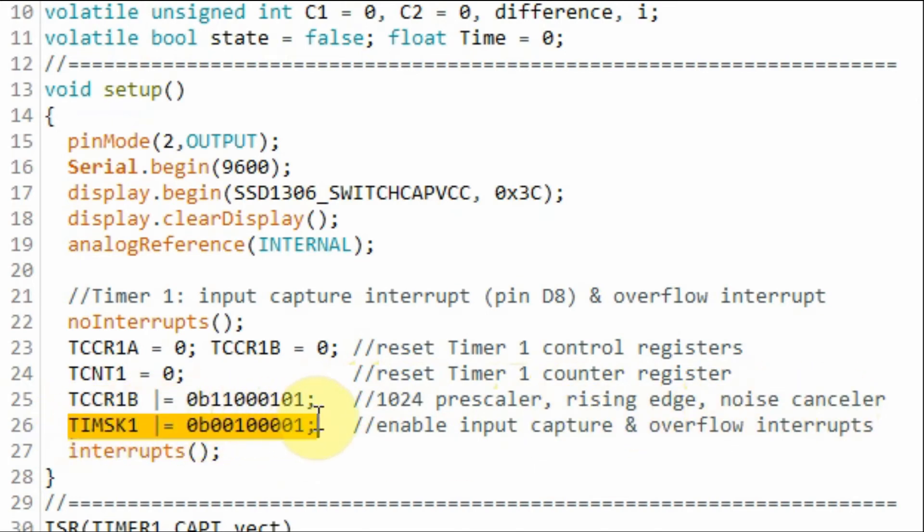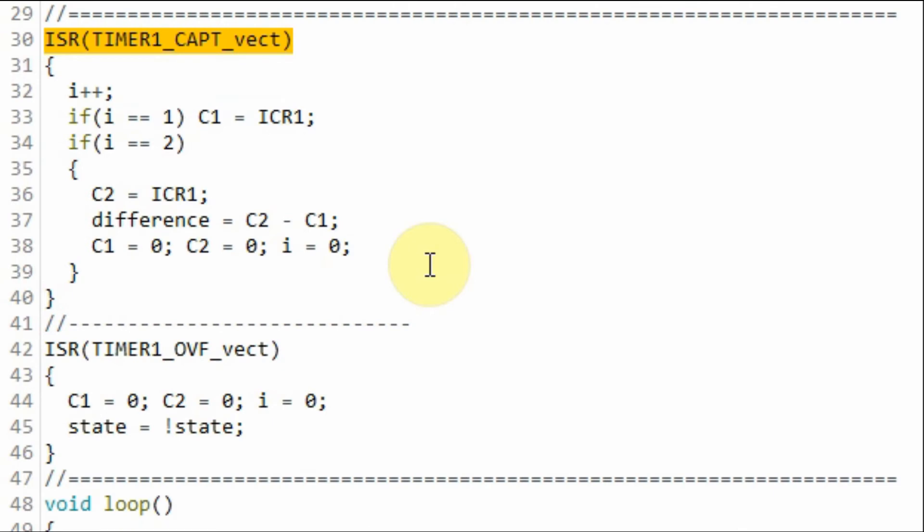When the first rising edge pulse is detected at pin D8 of the Arduino, input capture interrupt occurs and this ISR is executed, where we save the first count value inside a variable and then wait for the next pulse. When the second pulse arrives, again this ISR is executed and we store the second count value and then calculate the difference and then reset the variables to be ready for the next calculation.